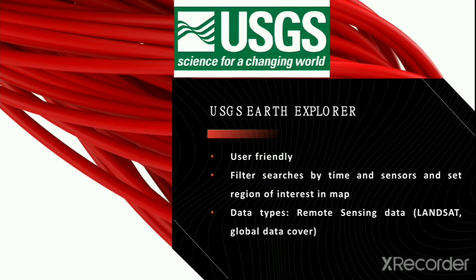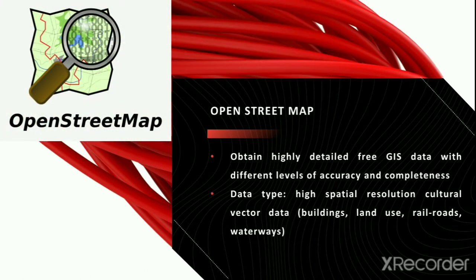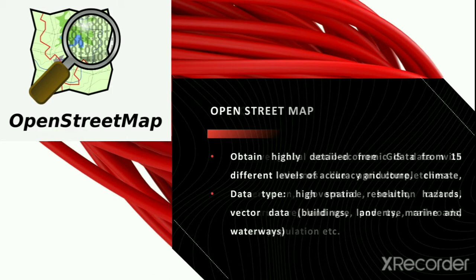The USGS, the Geological Survey of the United States, provides another major data source, generally offering remote sensing data, especially Landsat with global data coverage. For highly detailed free GIS data, OpenStreetMap is a major source, providing high spatial resolution cultural vector data free of cost.